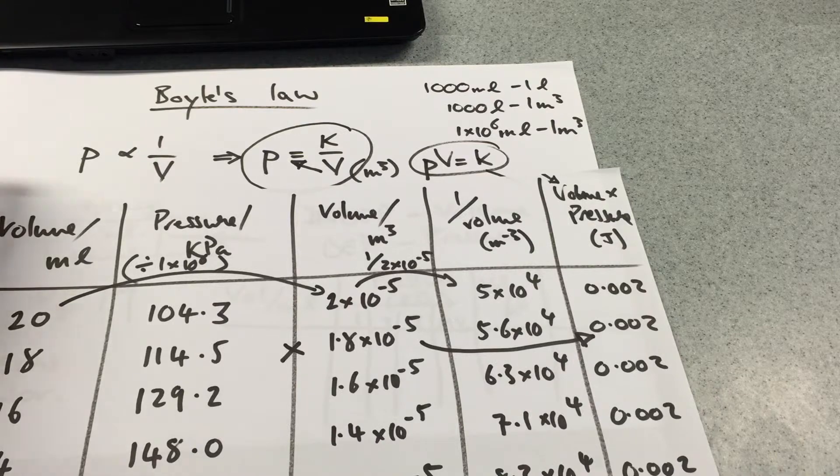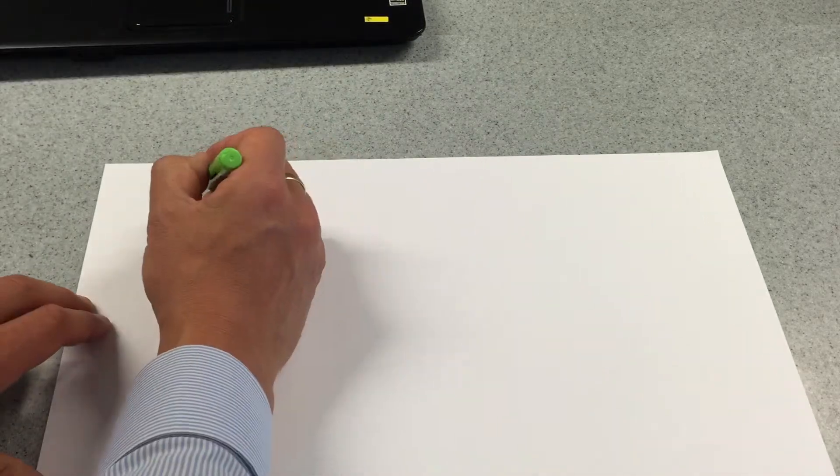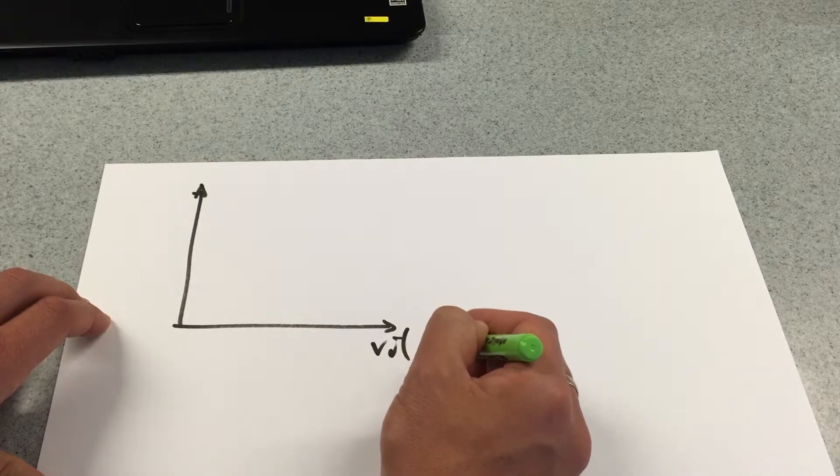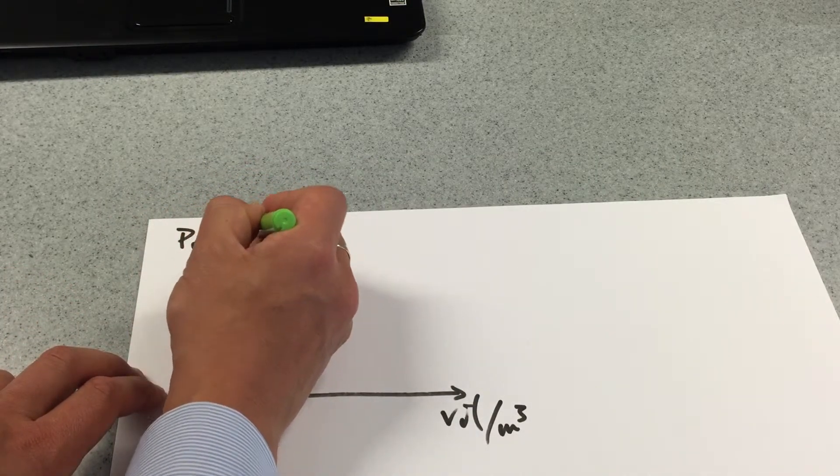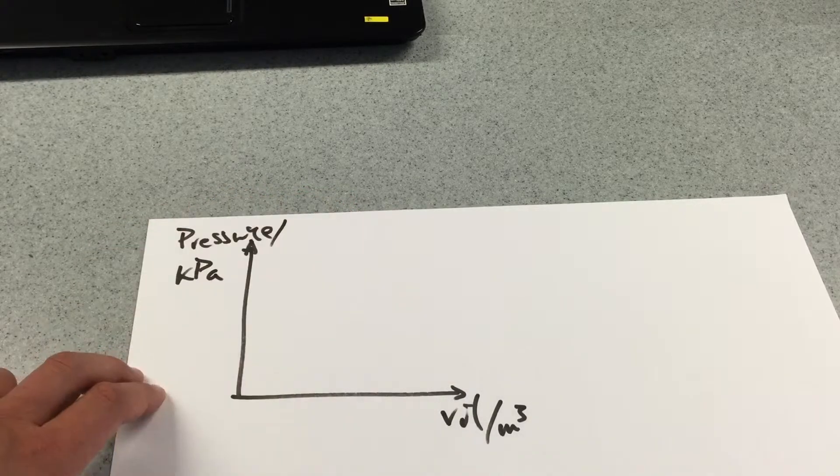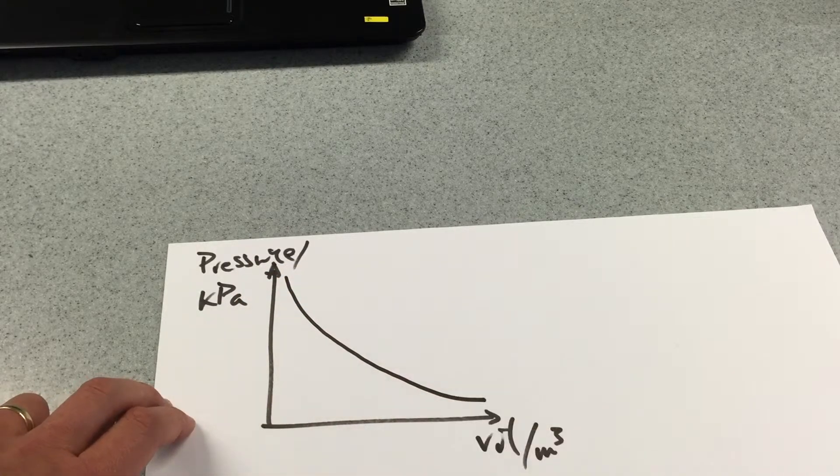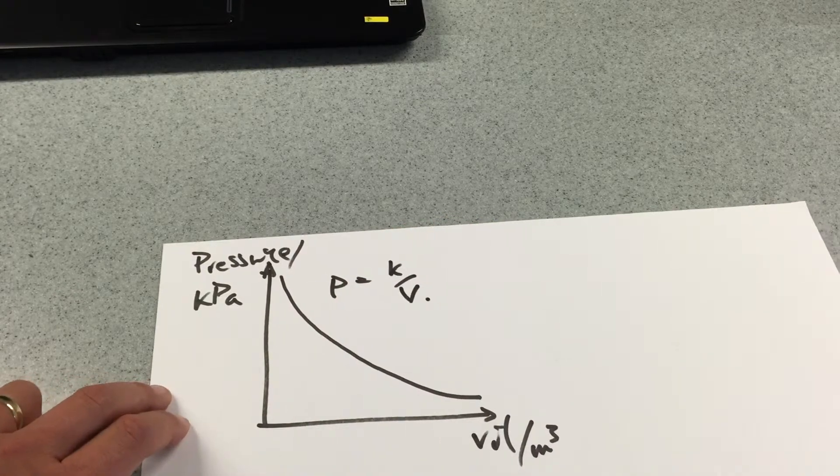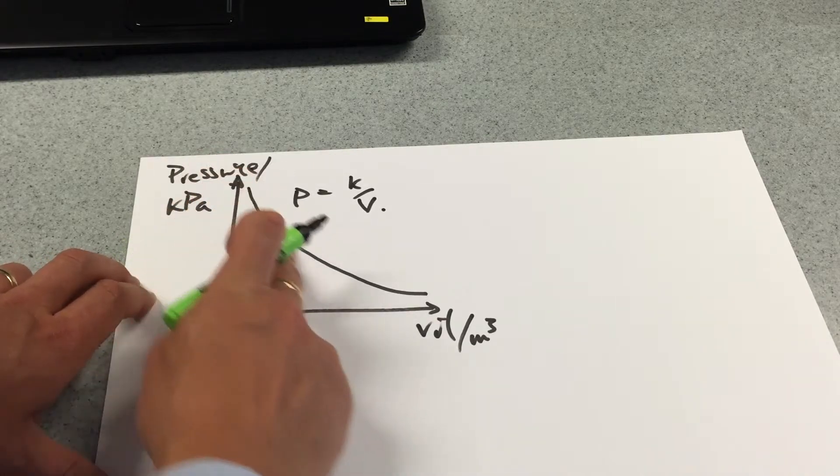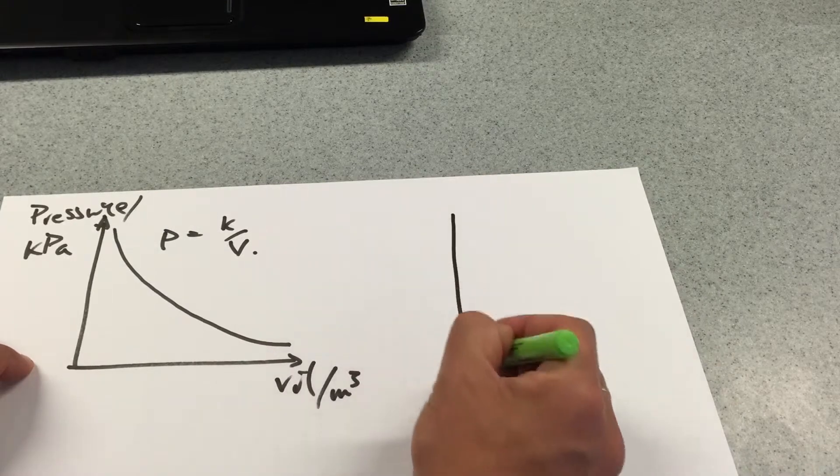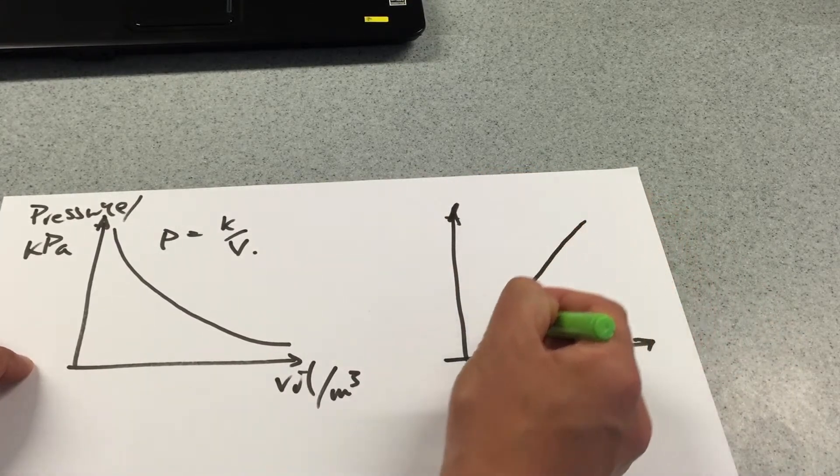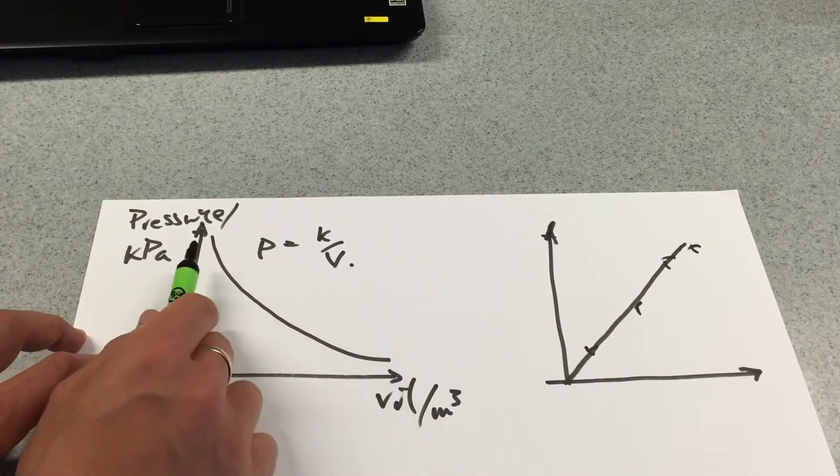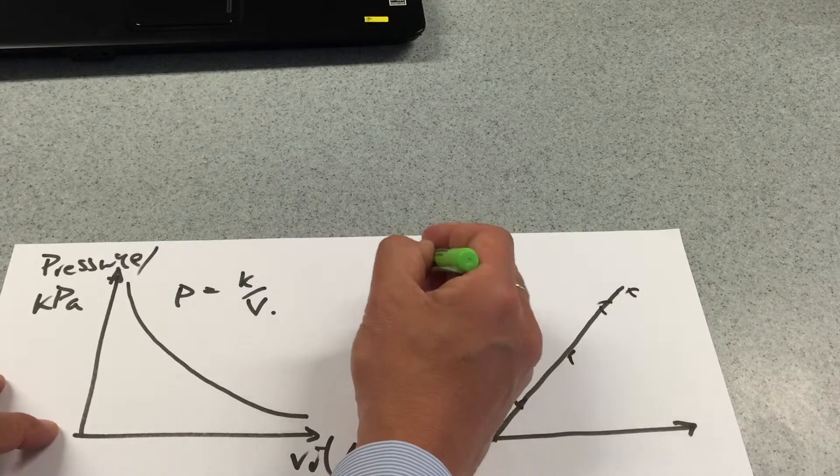Now the other way we can prove it is by drawing a graph and if we were to draw, remember my independent goes on the bottom which was the volume in meters cubed and my pressure my dependent goes along there in kilopascals then what I should get is something looking like that because pressure is equal to a constant over the volume. However you know that it's very hard to tell whether something is a curve or not a curve. It's much easier to tell whether something sits on a straight line hence it's easier to confirm whether this relationship holds true because you're not sure whether that's a one over V or one over V squared and exponential decay etc.